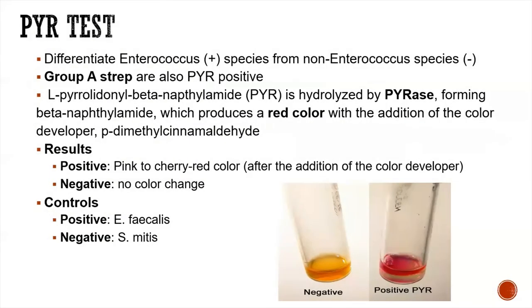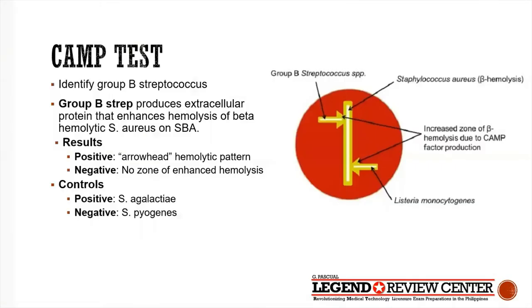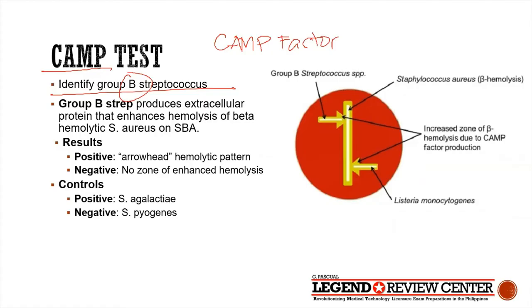In the PYR test, Group A is positive. Another test is the CAMP test — CAMP stands for Christie, Atkins, Munch-Petersen, the scientists who developed it. The CAMP test is used to identify Group B Streptococcus, or Streptococcus agalactiae. Group B strep produces CAMP factor, which enhances the activity of beta-hemolysin produced by Staphylococcus aureus. In the test, Staph aureus is inoculated in a straight line on blood agar.